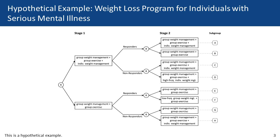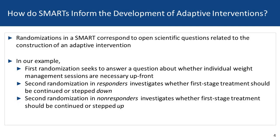So there's a lot happening here, but we'll get a better feel for this design as we walk through this section. You might be asking how SMARTs can inform the development of adaptive interventions. Specifically, it's the randomizations in a SMART that do this — the randomizations correspond to open scientific questions related to the construction of an adaptive intervention.